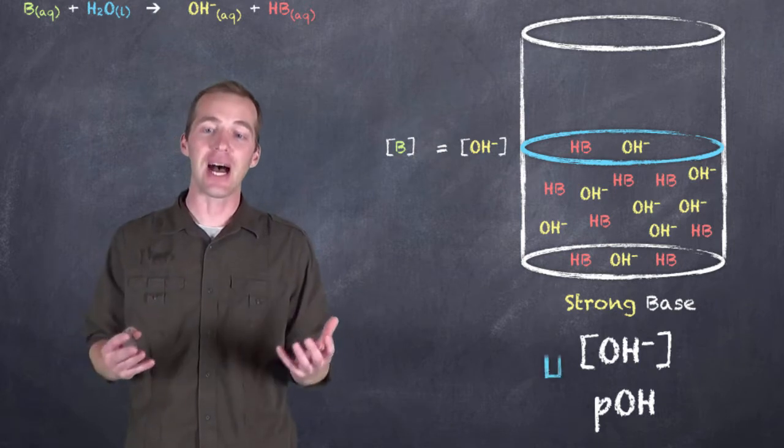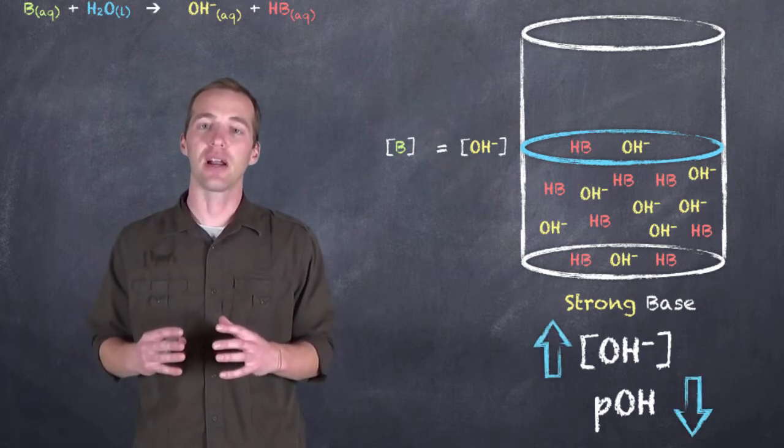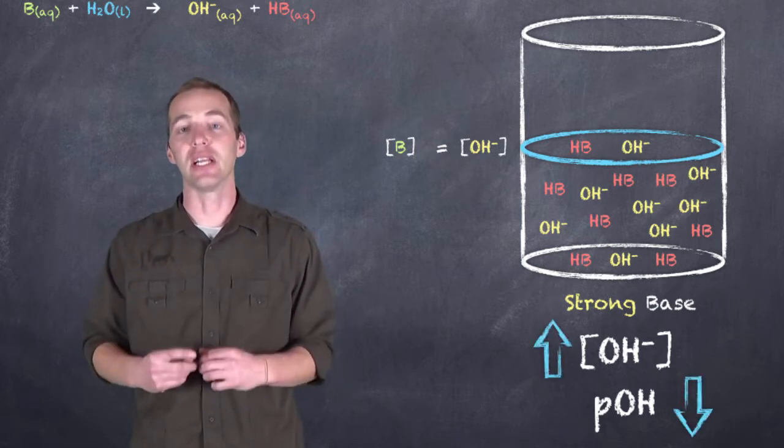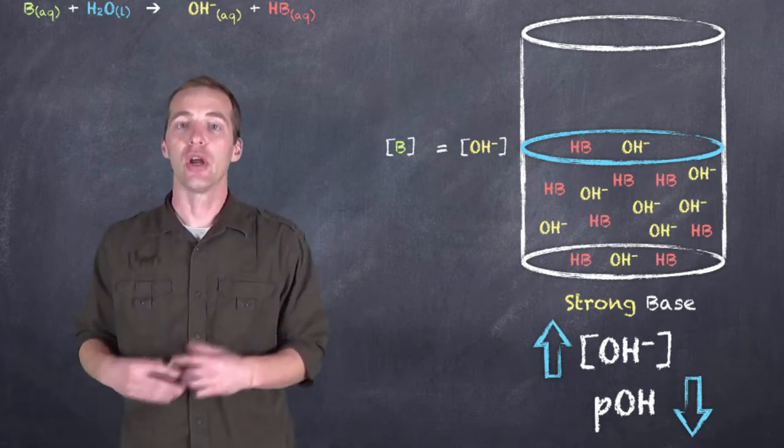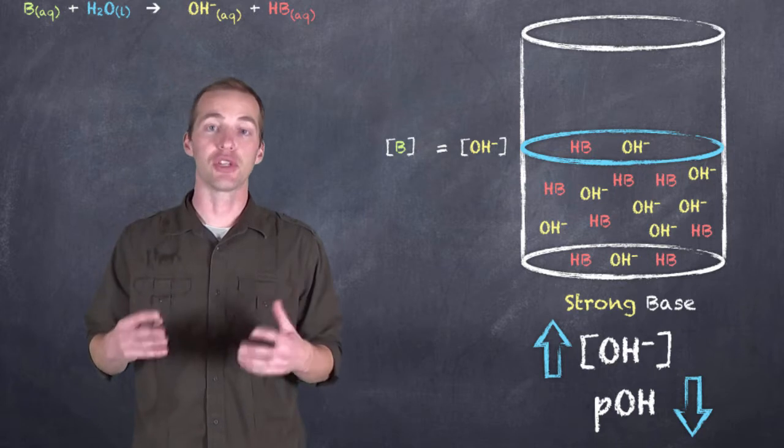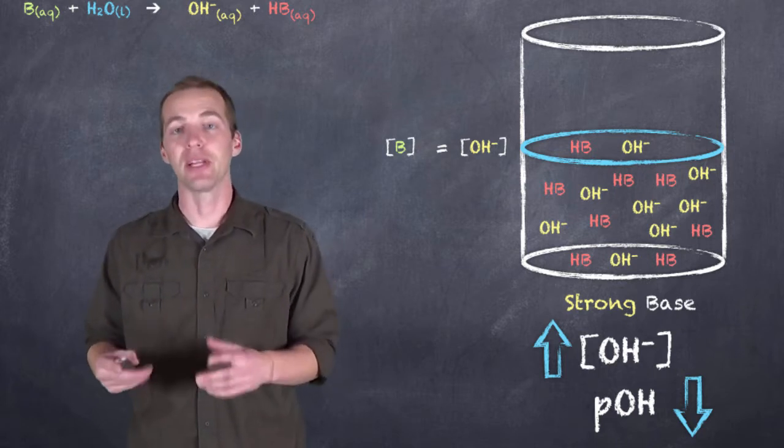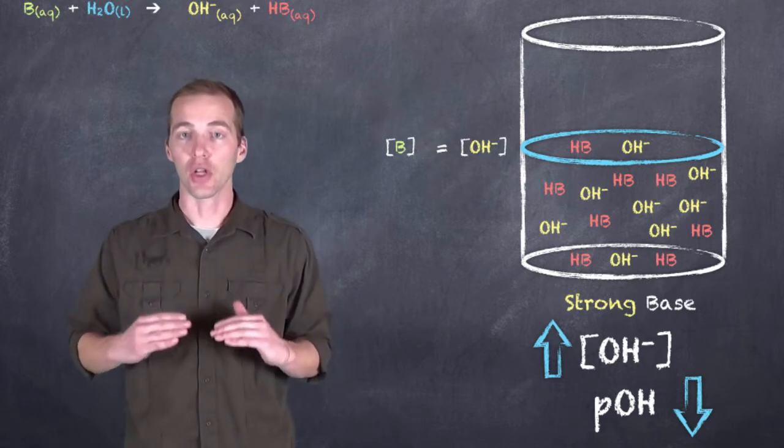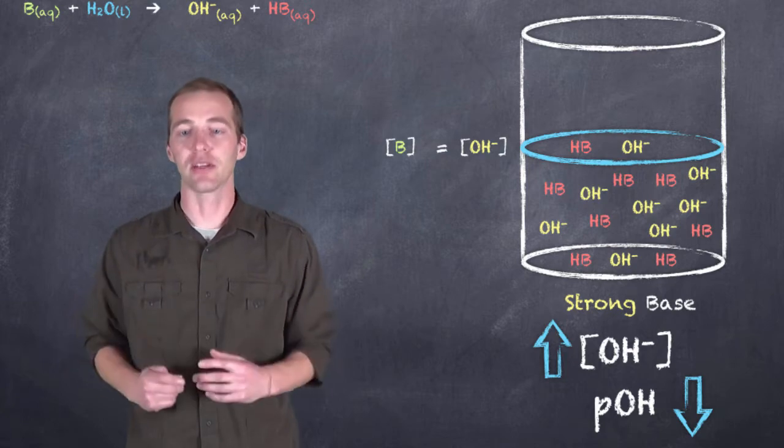That is, we have a really high concentration of hydroxide ions, and we have a very low pOH. Remember, the pOH is analogous to the pH scale, except instead of determining the power of hydrogen, we're determining the power of hydroxide. The lower the pOH, the more basic the solution.